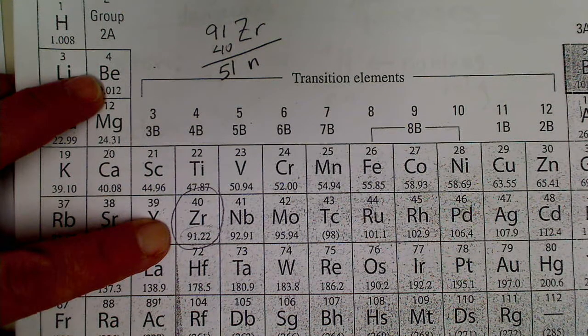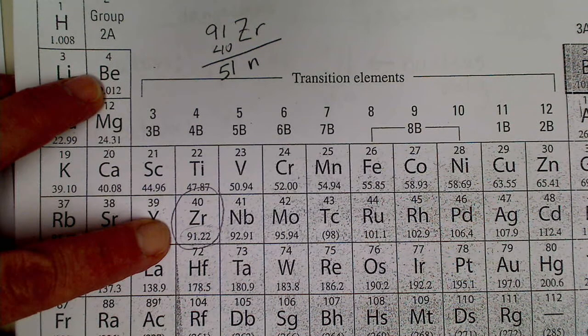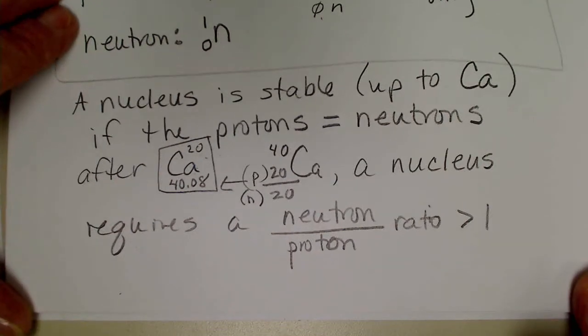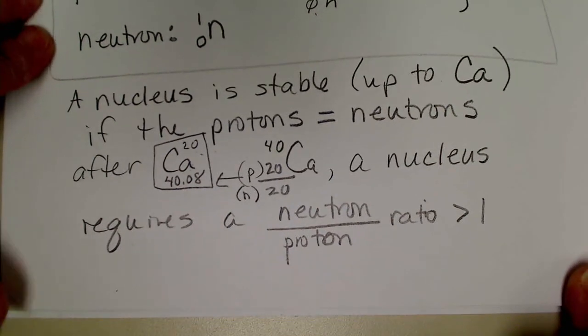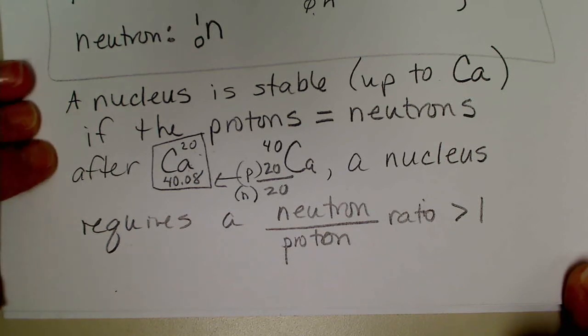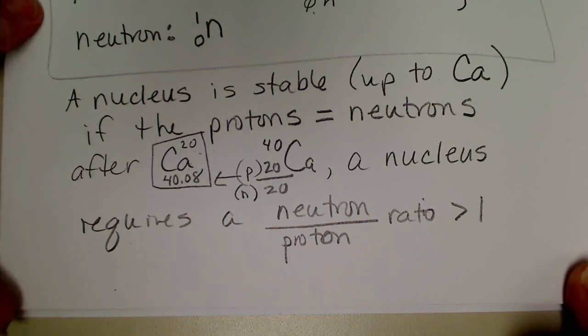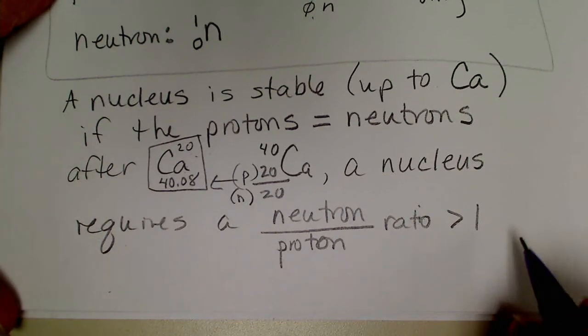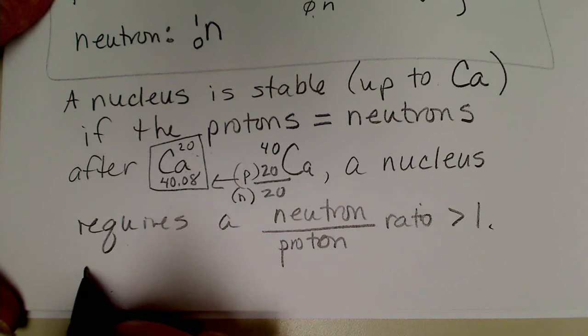So we're going to see that when we look at what's called the belt of stability. After calcium, for a nucleus to be stable, the protons, or the neutrons excuse me, need to outnumber the protons.